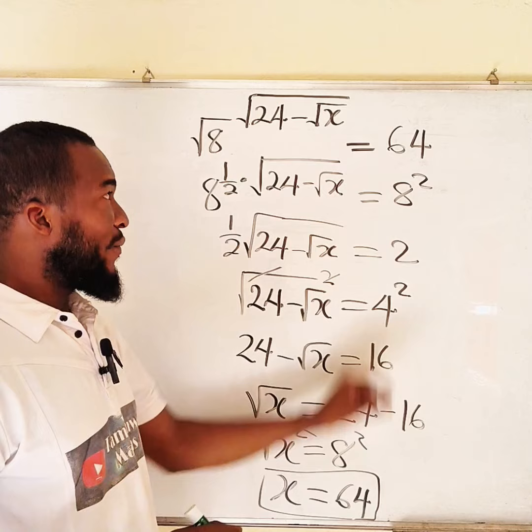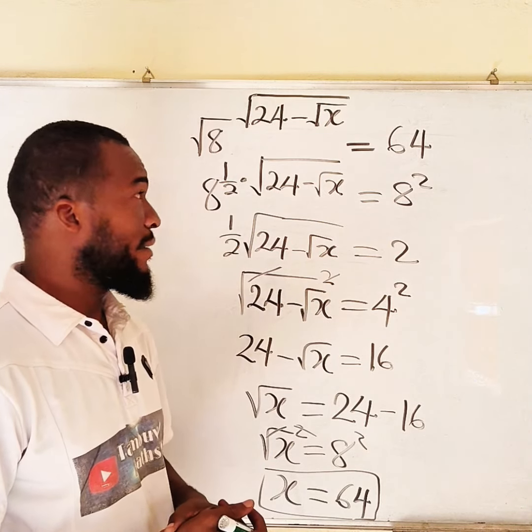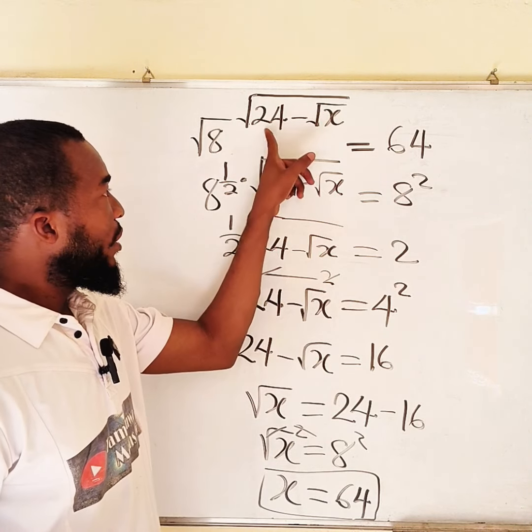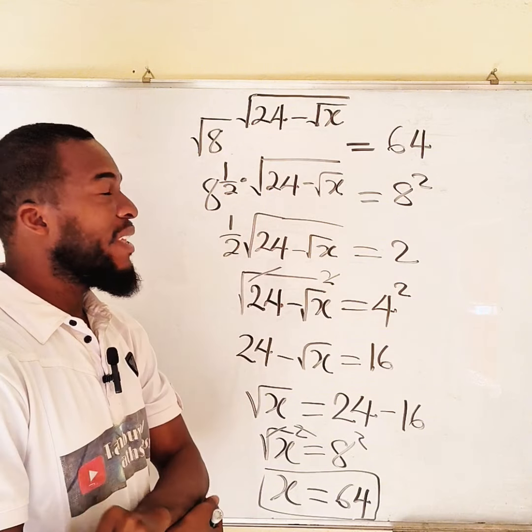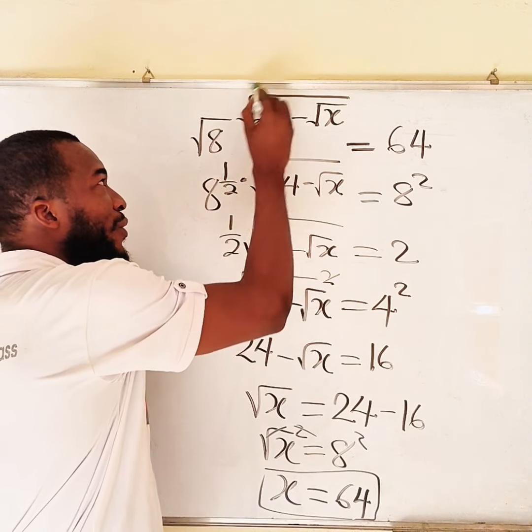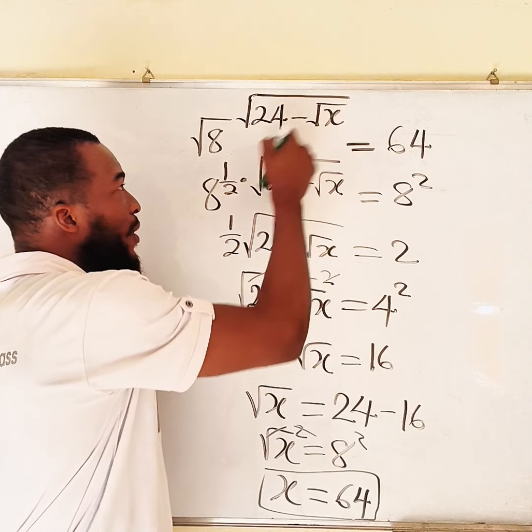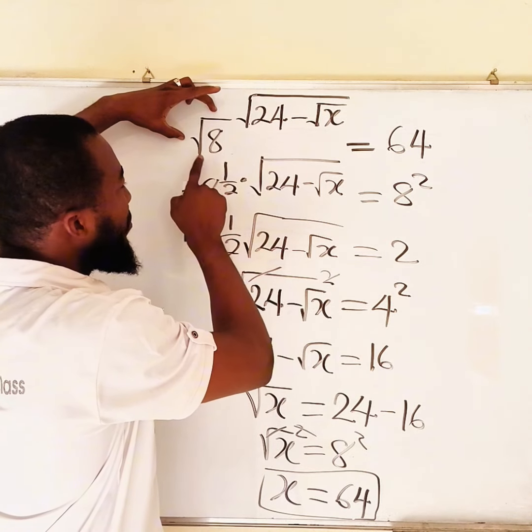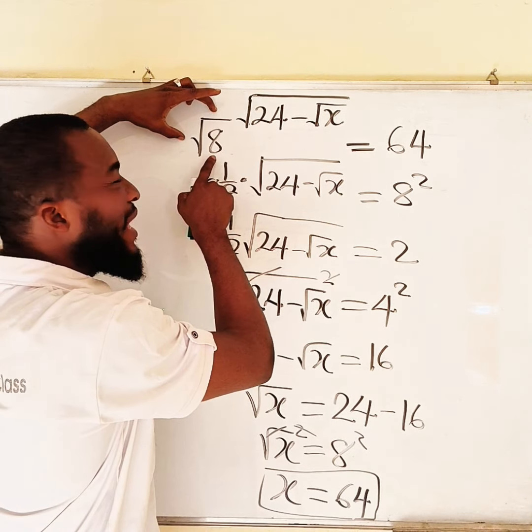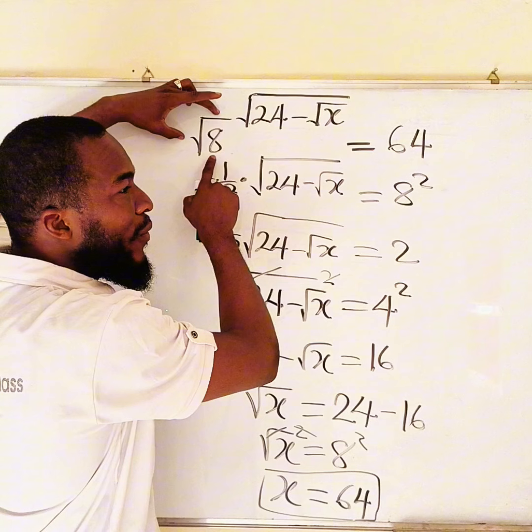x is 64. Square root of 64 is 8. Then 24 minus 8 is 16. Square root of 16 is 4. So we only have square root of 8 to the power of 4, right?